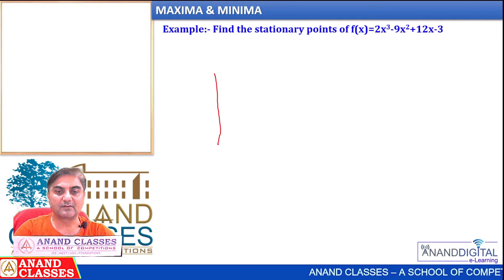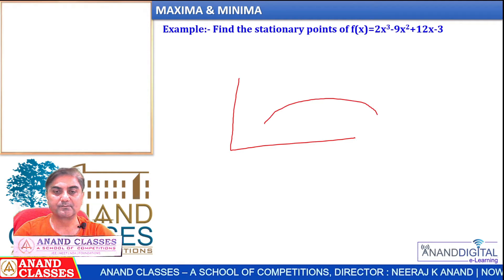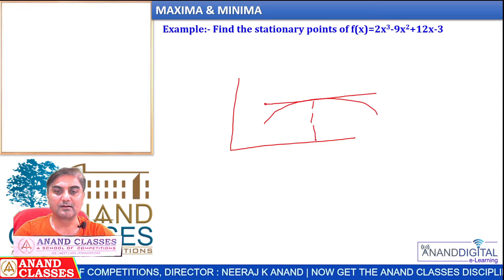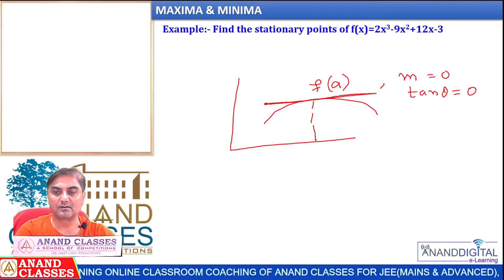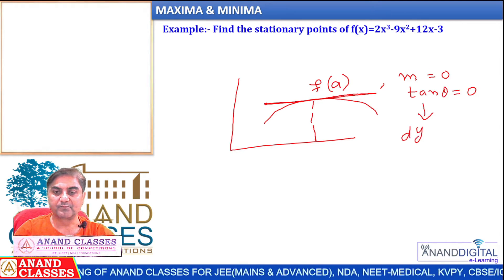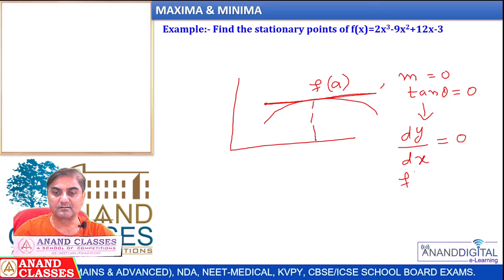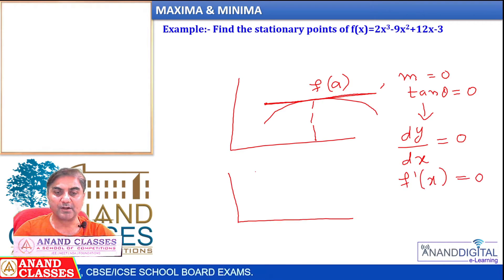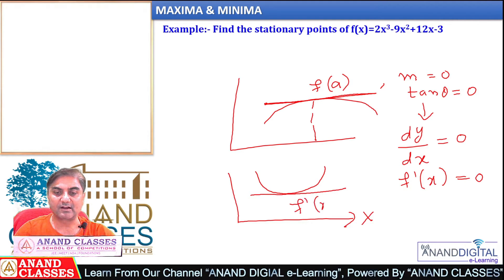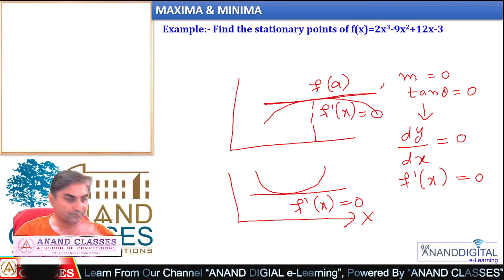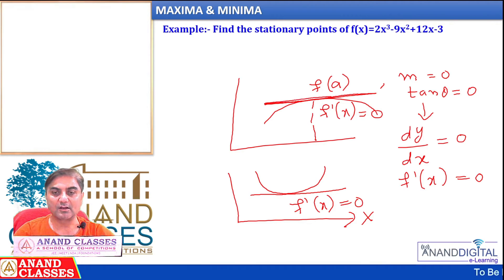Derivative = 0 means: look at the curve — at point a (for example a maximum point), the tangent at that point has slope 0. Slope 0 means tan θ = 0, which means dy/dx = 0, i.e., f′(x) = 0. Whether the point is a minimum or maximum, the tangent to the curve at that point is parallel to the x-axis, and the derivative there equals 0.